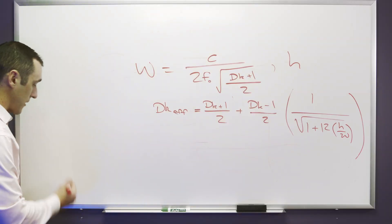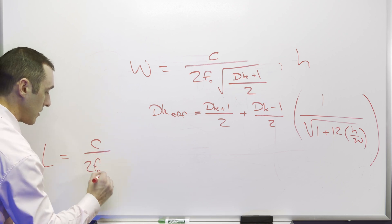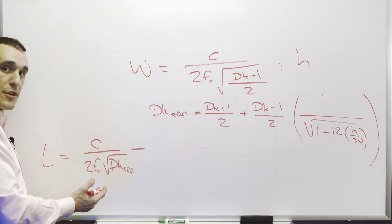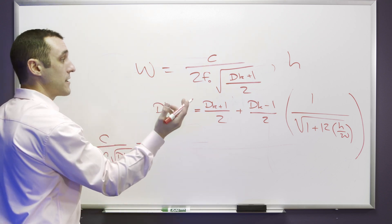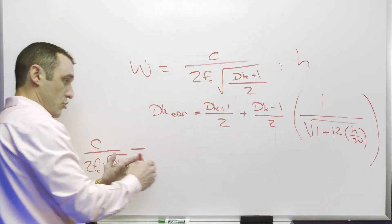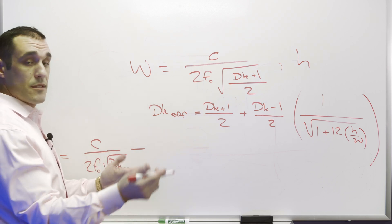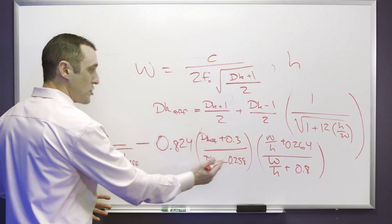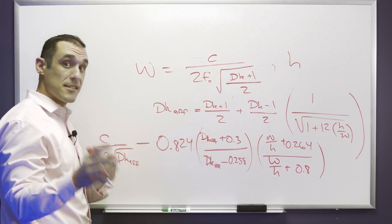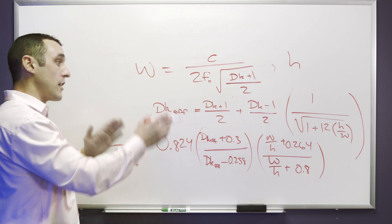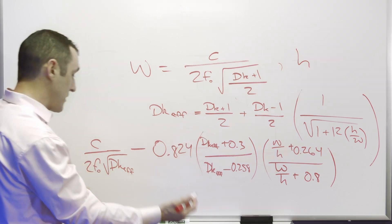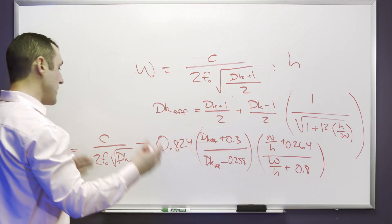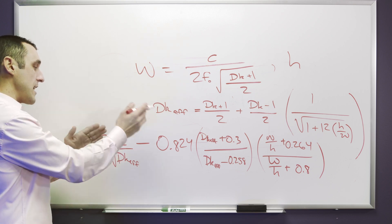The formula for length depends on the speed of light, the frequency, and the DK effective value. There is also a term that we subtract to account for fringing fields, and that term depends on the width and the thickness of the dielectric. This is a long equation, and all of these equations — width, DK effective, and length — are found in a blog linked in the description in a much more compact format.